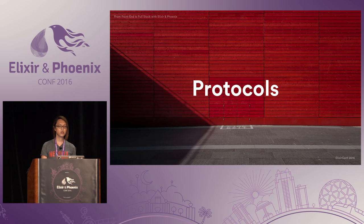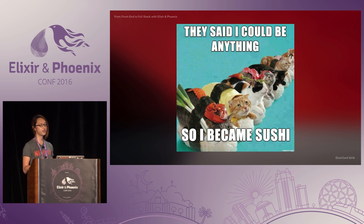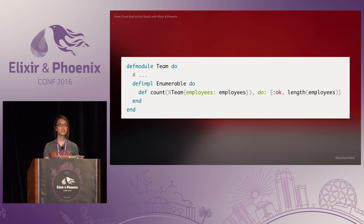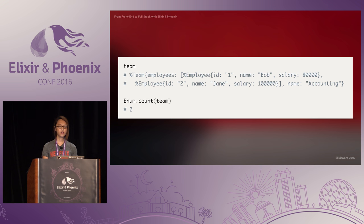Speaking of structs, one cool thing about them is that you can also define protocols for them. Structs combined with protocols are a way to achieve polymorphism in Elixir, which basically means you can act on something in a generic way without knowing specifically what that thing is. Let's build up that team struct example with a simple protocol. We can define an implementation of Enumerable.count for our team struct so we can see how many employees are in the team, using the defimpl keyword inside the body of the module. If we define all the necessary implementations — count, member, and reduce — then our team struct would effectively become a kind of enumerable even though it's really a struct with key-value pairs.